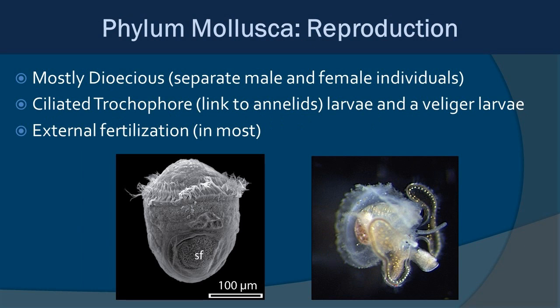In terms of reproduction there's quite a lot of variability, but most molluscs are dioecious — separate male and female individuals. They have a ciliated trochophore larva initially, which is actually linked to annelids. Then they also have veliger larvae, which have what look like big dumbo ears on either side with a little snout in the middle. Fertilization is external in most, though some lay eggs and others like squid use spermatophore packages.